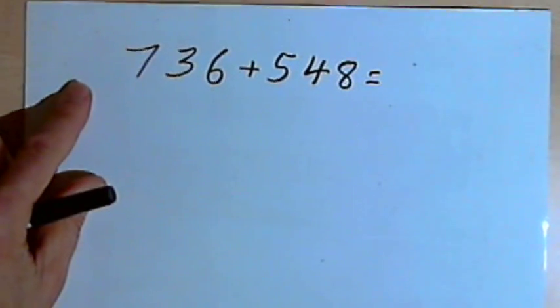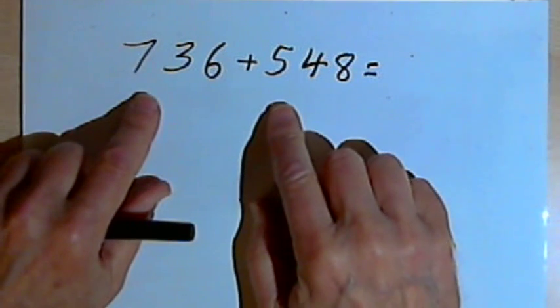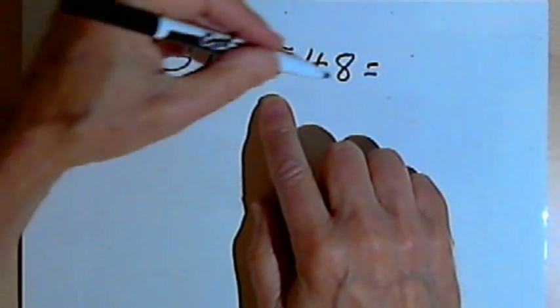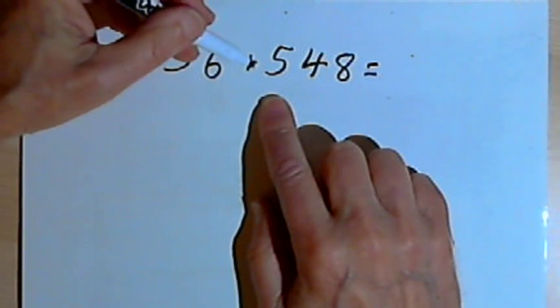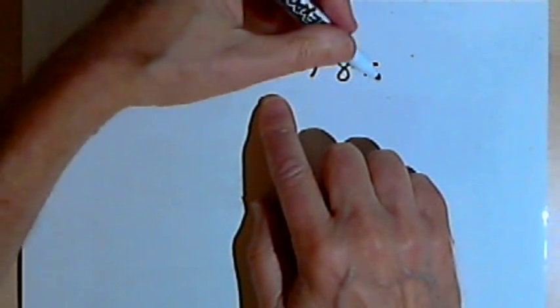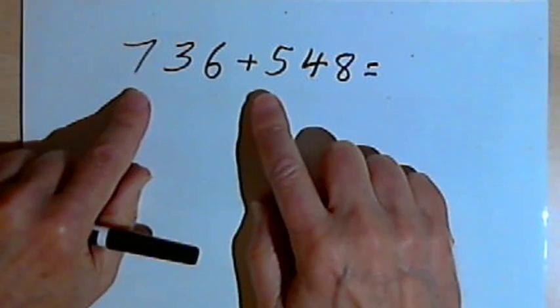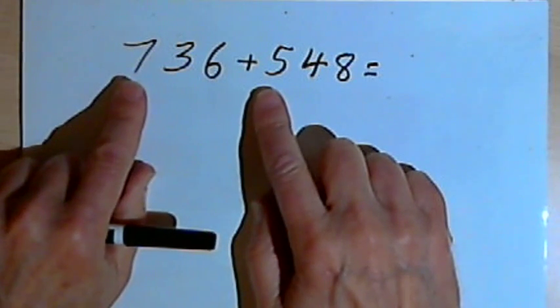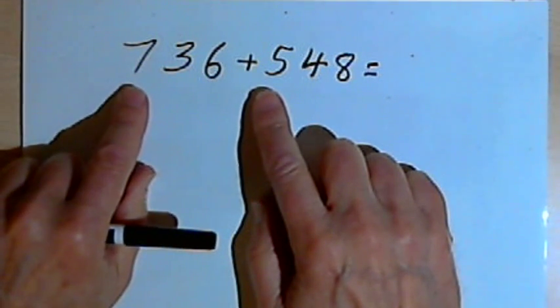And here's how we would do the same numbers, just doing them mentally. So I've written them again, but I've written them on one line. Just 736 and then a plus sign and then 548 and my equal sign. And what I'm going to do is I'm going to look at these numbers starting from the left side of each number.